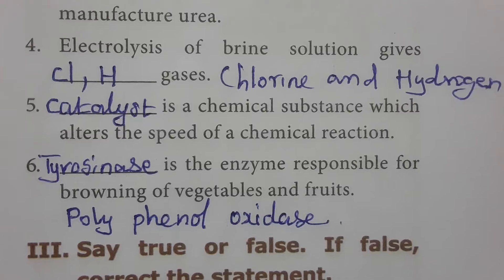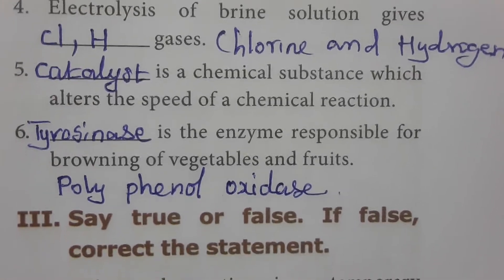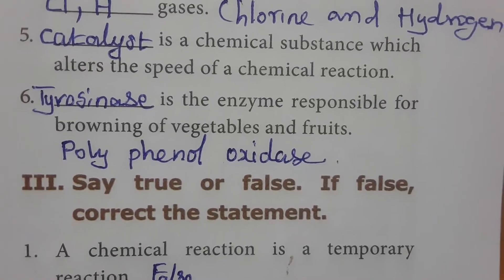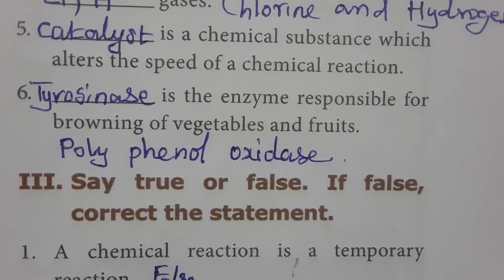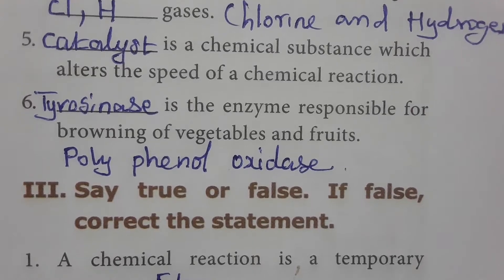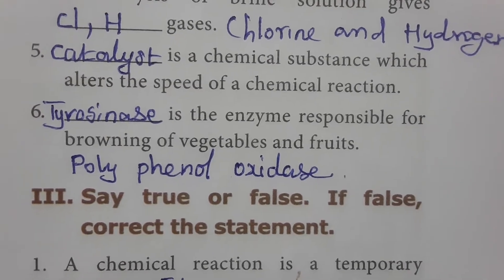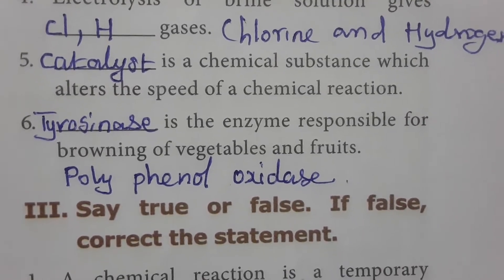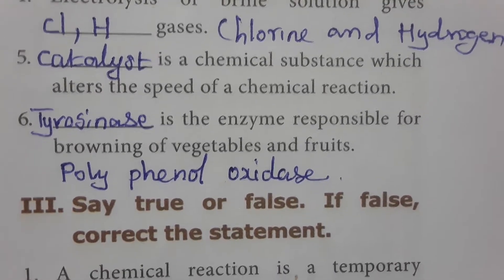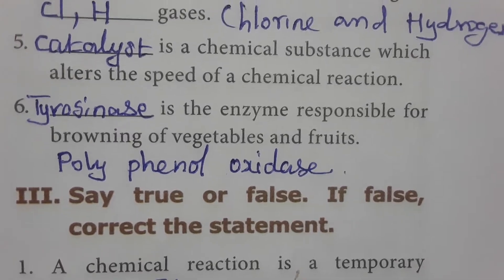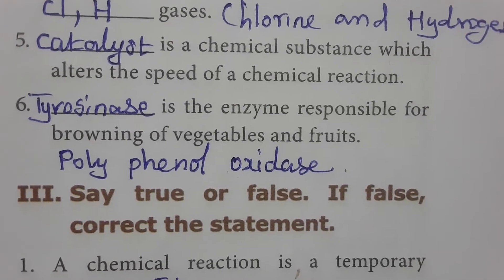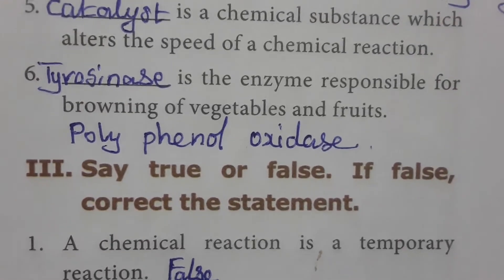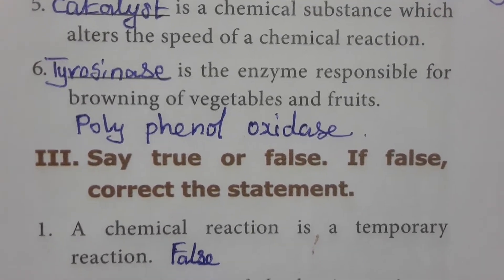Tyrosinase is the enzyme responsible for browning of vegetables and fruits. The melanin pigment contains an enzyme called polyphenol oxidase, which is otherwise known as tyrosinase. So tyrosinase is the enzyme responsible for the browning of vegetables and fruits.